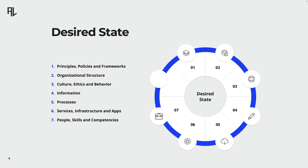Now consider the processes. These are the day-to-day activities and procedures that keep your information security strategy running smoothly. They ensure that security measures are not just theoretical, but are actively practiced and continuously improved.